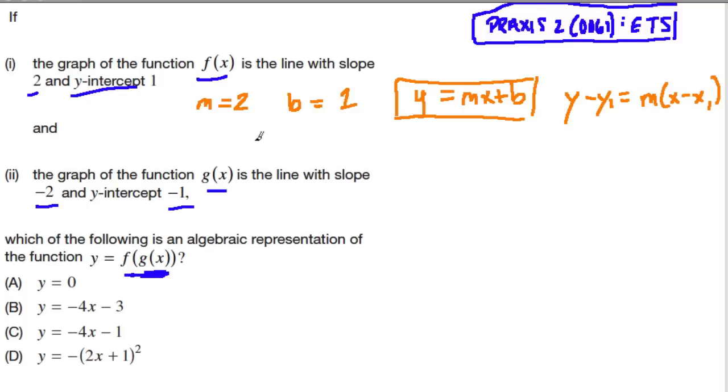So if m is 2 and b is 1, we have y equals 2x plus 1. And then g of x, well, g of x is the line with the slope of negative 2, so m equals negative 2 and b equals negative 1. So here, the equation for this line is y equals negative 2x minus 1.